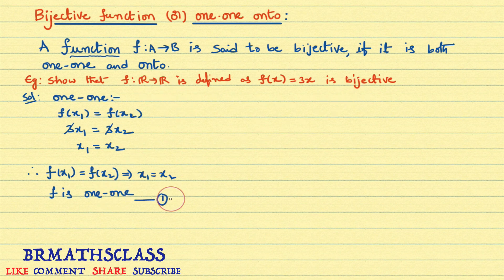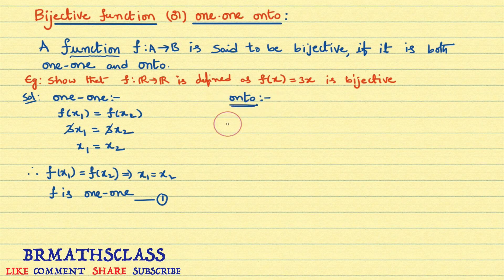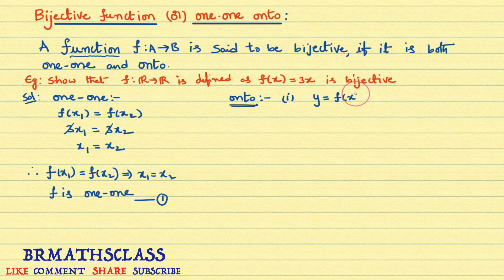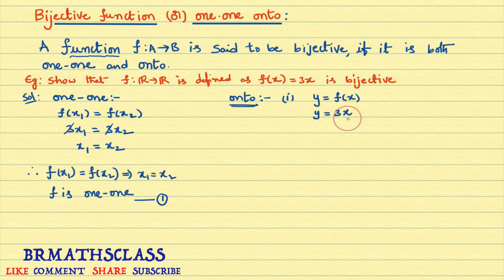When we say this function is bijective, it must be both 1-1 and onto. Now we will check onto. Most students get confused while checking onto function. We will go step by step. There are 3 steps total. Step 1: take y equal to f(x). In place of f(x), write the given function. So y equal to 3x.